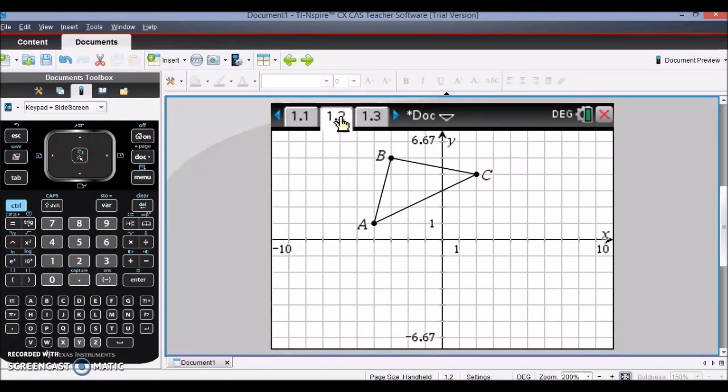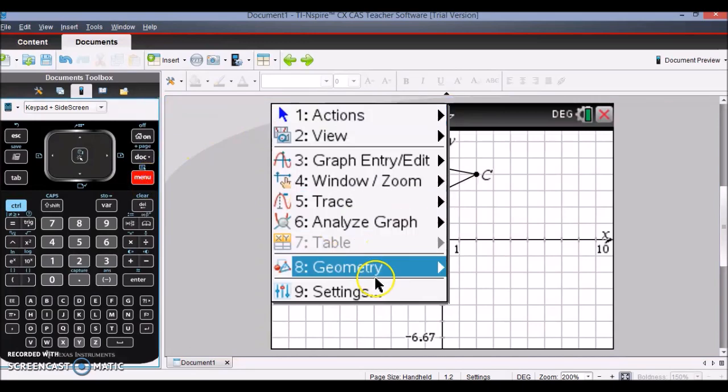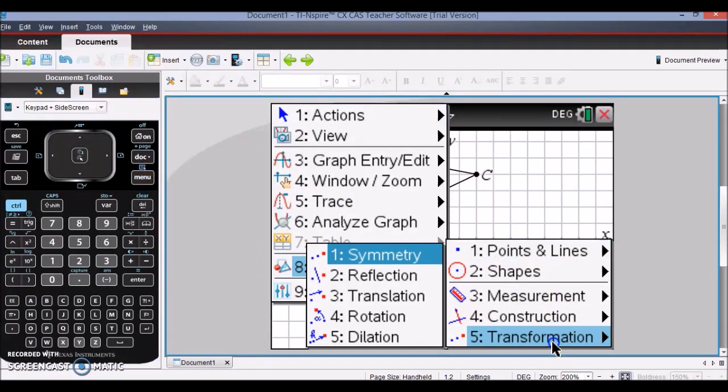The next transformation that I want to illustrate is the reflection transformation. So again, I have triangle ABC already graphed. I'm going to go to Menu, Geometry, Transformation, and select the reflection feature.